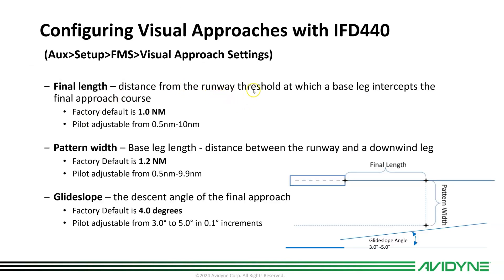The final length is the distance from the runway threshold at which the base leg intercepts the final approach course — it defaults to one mile but can be set up to a ten-mile extended centerline. The pattern width is the distance between the runway and the downwind leg, defaulting to 1.2 nautical miles and adjustable from half a mile to 9.9. The glide slope defaults to four degrees — this is a visual approach with no obstacle clearances provided, so coming in a little higher is safer. You can adjust the glide slope from three to five degrees in one-tenth of a degree increments.